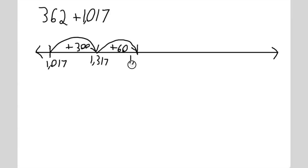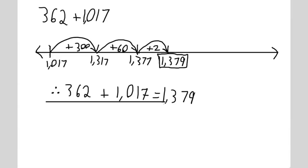Then we added 60 to get 1377. Last, we jumped two more units to the right to land on our final answer, 1379. Number lines are interesting and they are efficient because there is no regrouping.